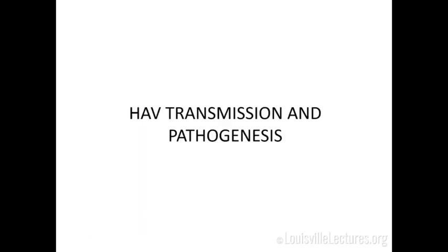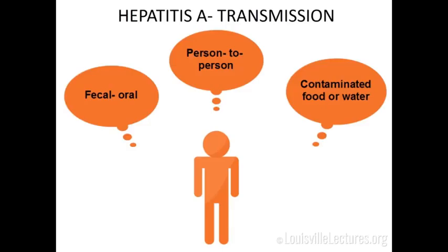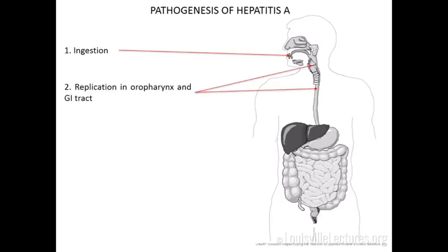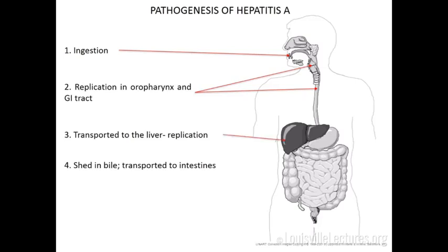Transmission and pathogenesis: we know it's fecal-oral. Person-to-person transmission has been documented through contact, sharing cups and utensils in a family. MSM transmission has also been documented, as has contaminated food or water. In the pathogenesis, you ingest the virus, it replicates in the oropharynx and GI tract, gets transported to the liver where it further replicates, is shed in the bile and transported to the intestines, and then shed in the feces — at very high levels, much higher than the detectable viremia.